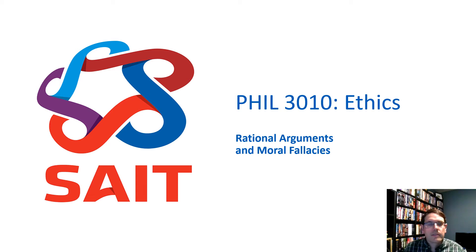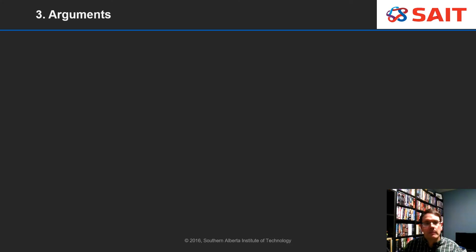In this video I'll discuss rational arguments and moral fallacies. What makes an argument rational is that evidence is provided and the evidence has the right sort of connection to what it is that you're trying to argue for.